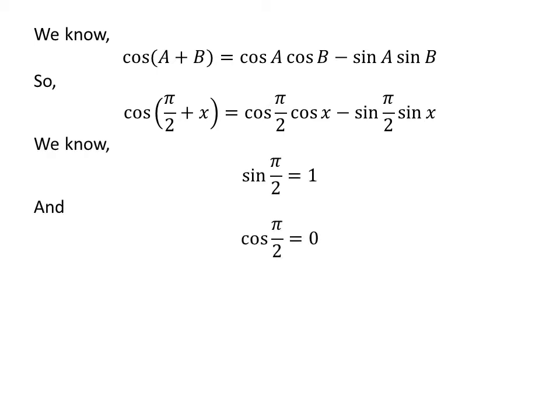We know the value of sine of half of pi is equal to 1 and cosine of half of pi is equal to 0. Let us replace the value of sine of half of pi and cosine of half of pi in the above expression of cosine of half of pi plus x.